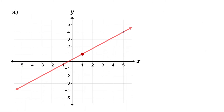First, locate two points on the line with integer coordinates. Next, find the rise. Start at the point on the left, and count how many units you move up to reach the level of the point on the right. We move three units, so the rise is three.